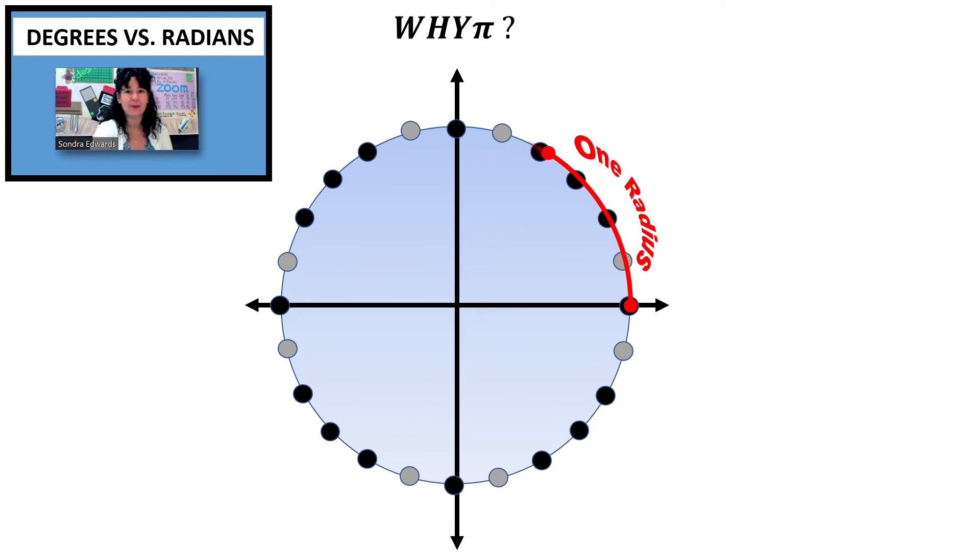We have one radius to there, that is two radii. Here's one more going in there. Three radii. Now, three radii will not quite take us over to that half circle mark. We still have just a little bit left there. Now, how much is that little bit?